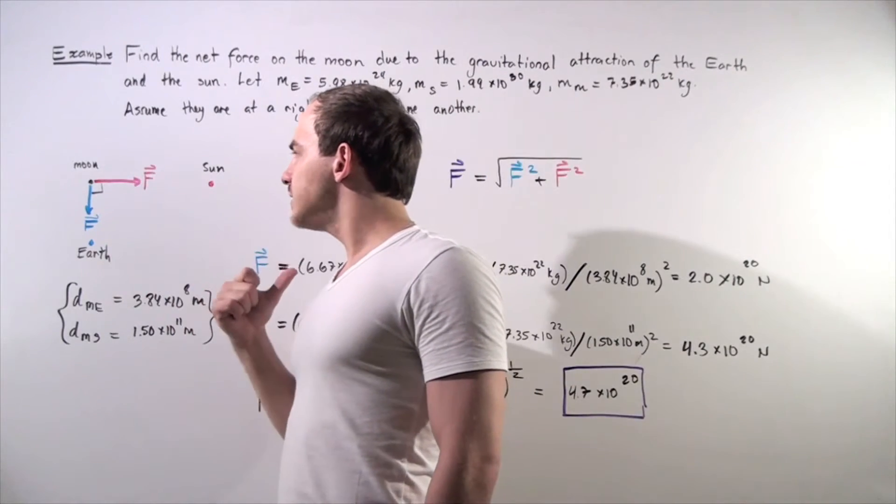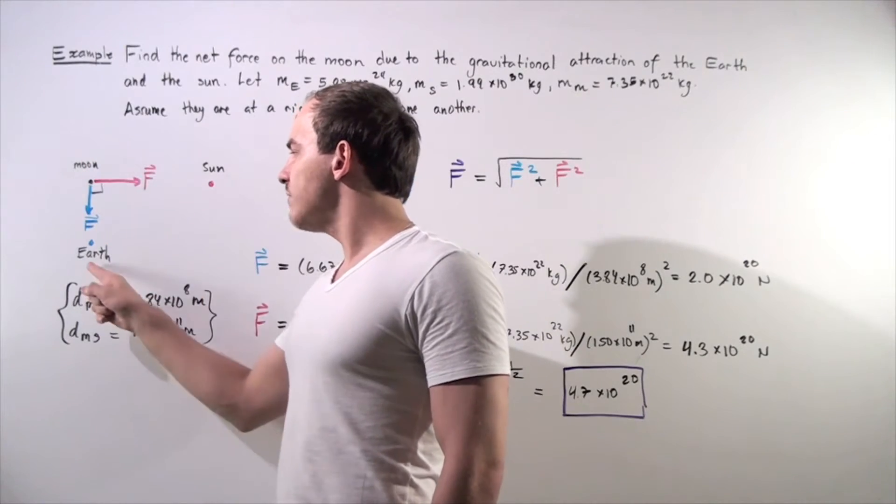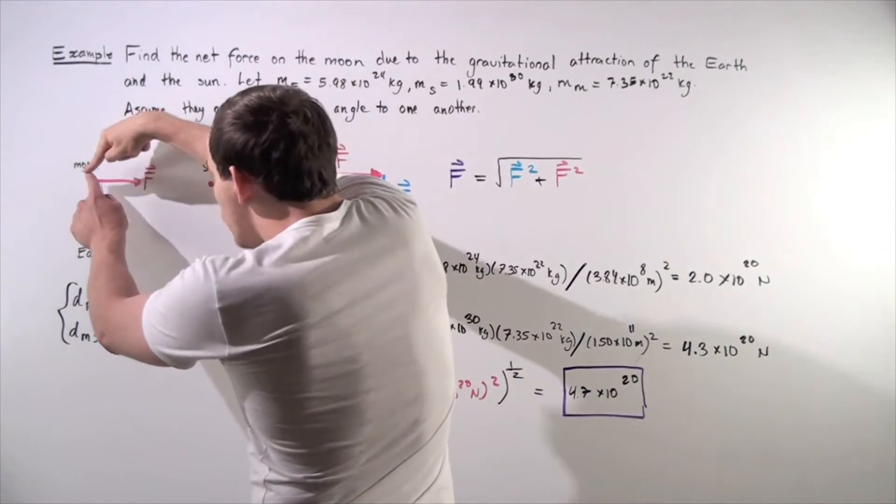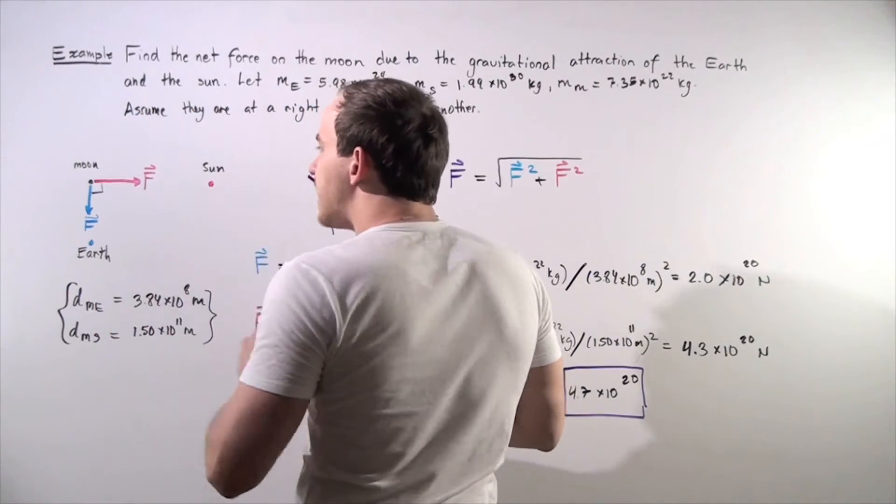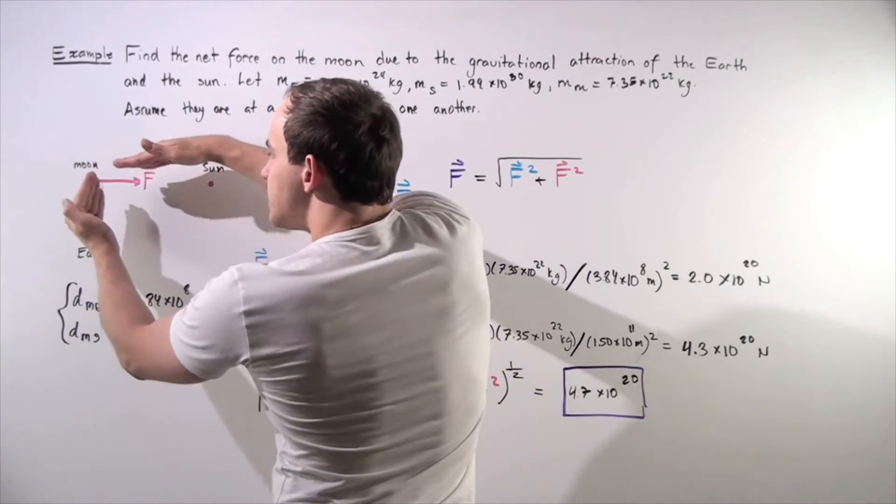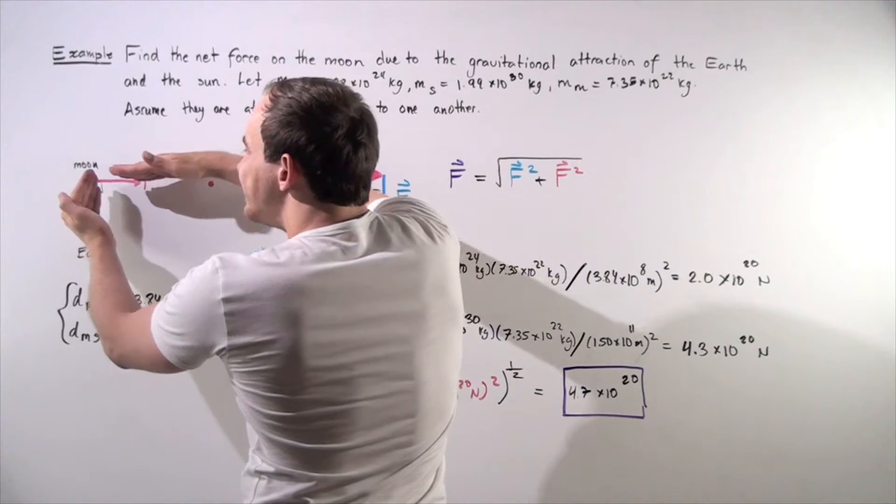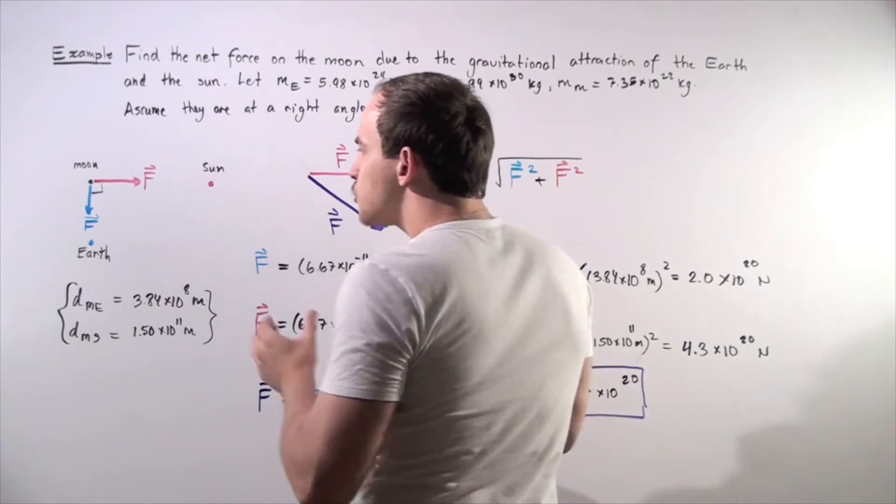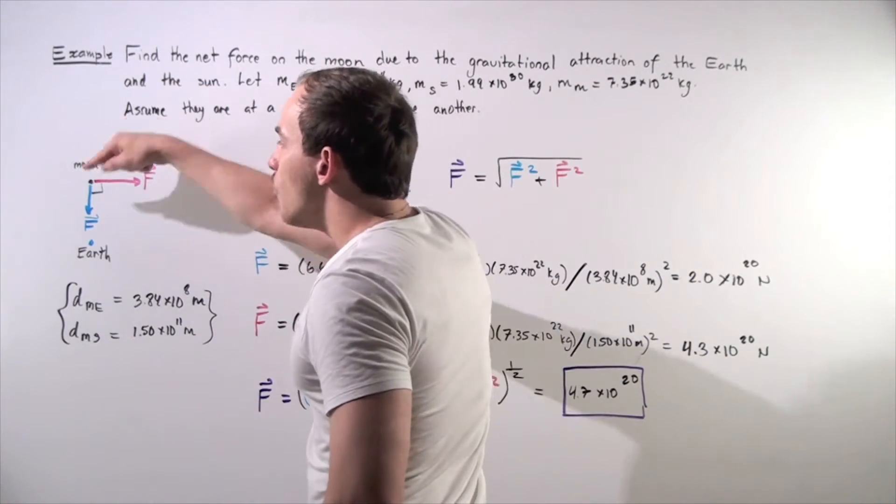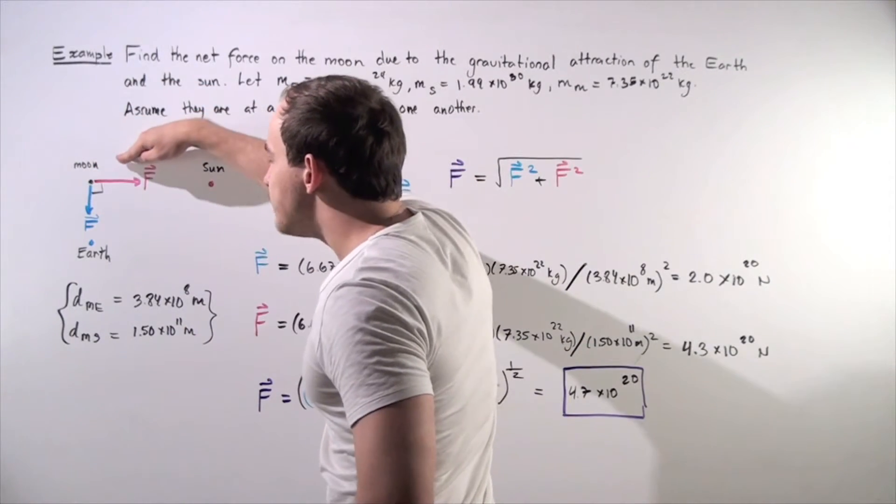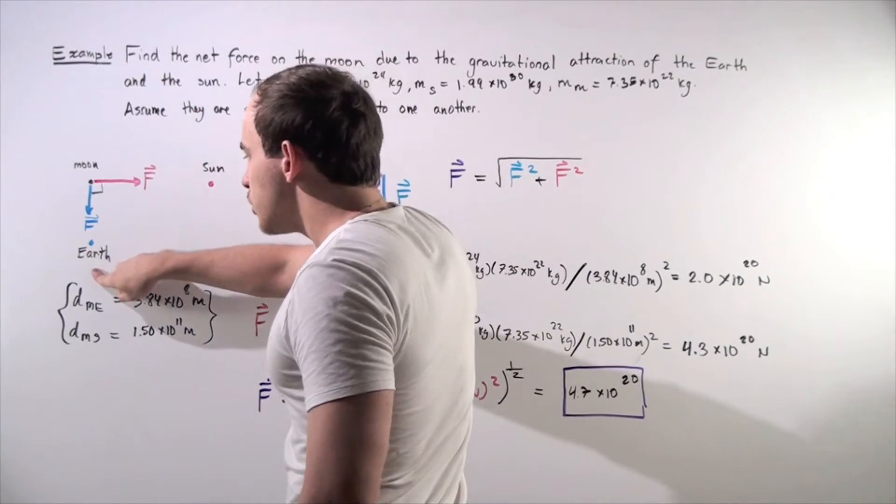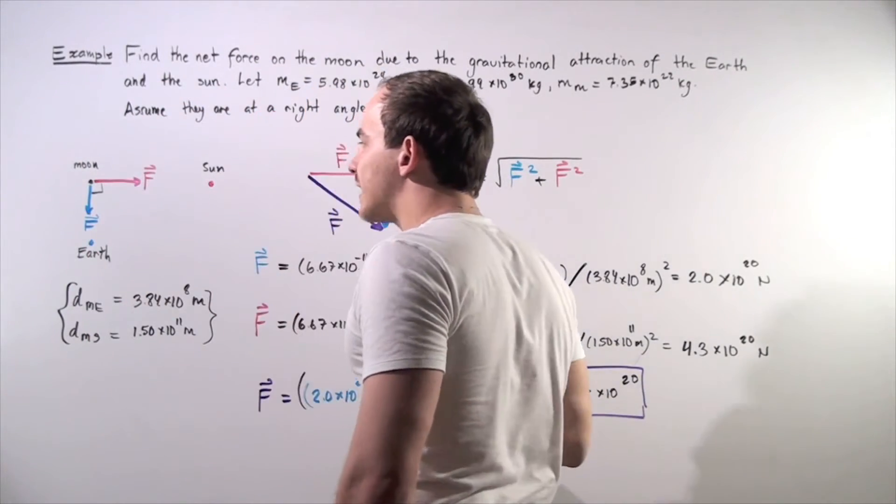So let's look at our diagram. We have the Moon, we have the Earth, and we have the Sun. If we connect the Moon to the Sun and then connect the Moon to the Earth, these connections are exactly at a 90 degree angle to one another. Let's represent the force acting on the Moon due to the Sun as a red vector, and the force acting on the Moon due to the Earth as a blue vector.